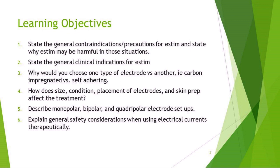I want you to be able to state the general clinical indications for ESTIM, and we'll talk more specifically about them in the other chapters. I want you to know why you would choose one type of electrode versus another — carbon impregnated versus self-adhering, and when and why to use individual ones. Know how the size, condition, and placement of electrodes, as well as your skin prep, affect the treatment. You should also be able to describe monopolar, bipolar, and quadrupolar electrode setups — one, two, and four electrodes — and explain general safety considerations when using electrical currents therapeutically.